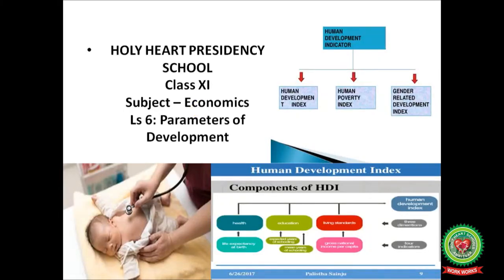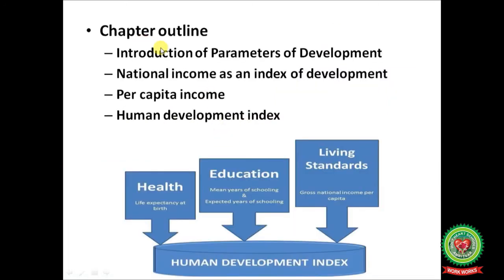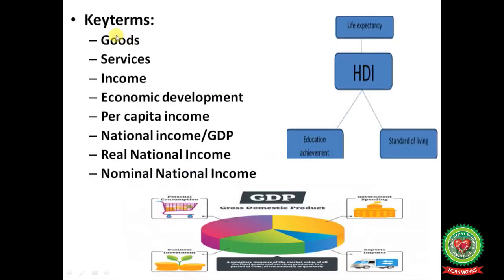Hello students, welcome back to the economics class of plus one standard. Today we will start with lesson number 6, Parameters of Development. In this chapter you will learn about the parameters of development, national income as an index of development, per capita income, and human development index. Let us discuss some important key terms related to this topic.